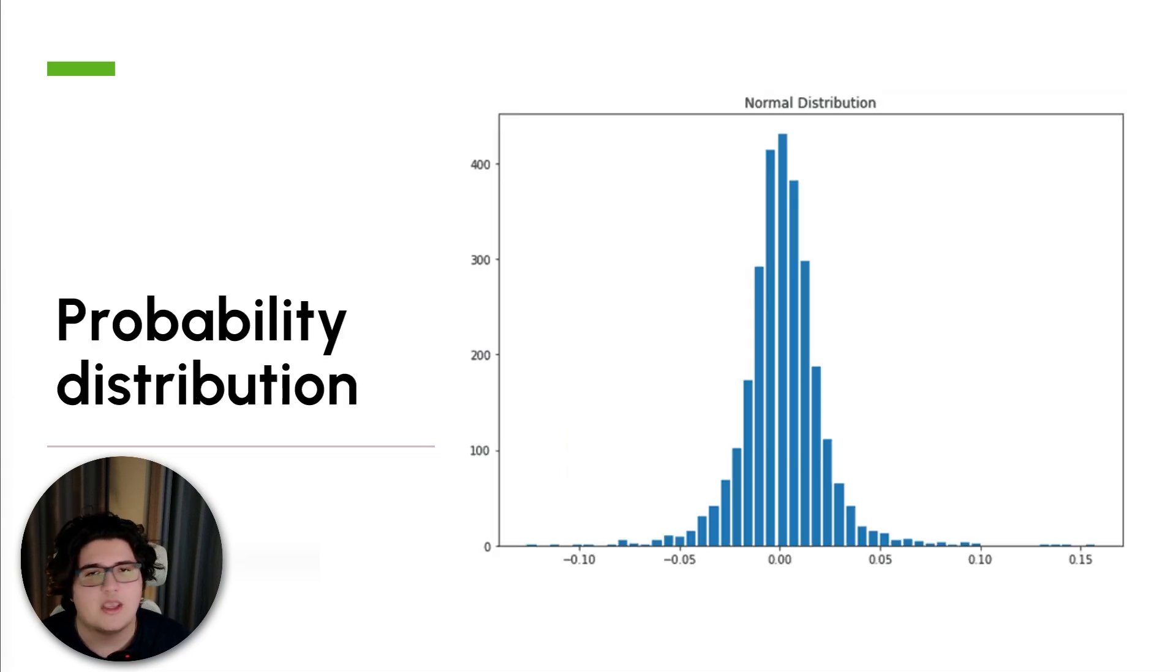Next is probability distributions. Imagine a bell curve. That's exactly what a probability distribution normally looks like. It shows the likelihood of different outcomes, e.g. this could be stock price changes on a particular day.